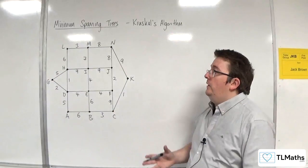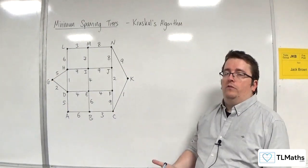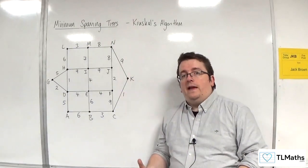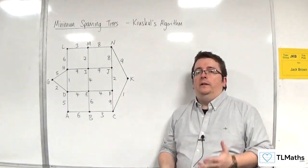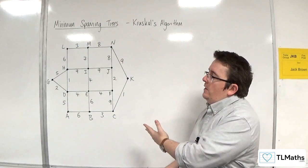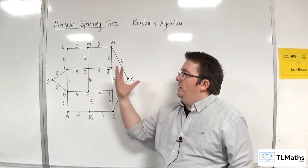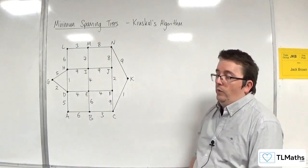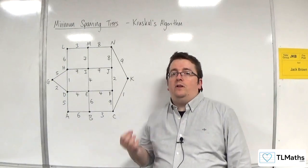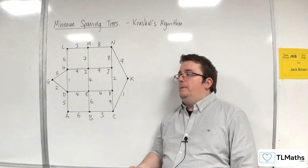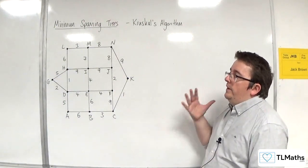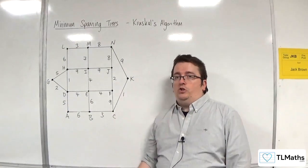In this video, I'm going to go through a second example of using Kruskal's algorithm. In the first example, I wrote down all of the edges in order of size. When the algorithm is applied to something like this network, I don't particularly want to have to write down all of the edges in size. It's just going to take me too long. So what I need to do is do this by inspection.